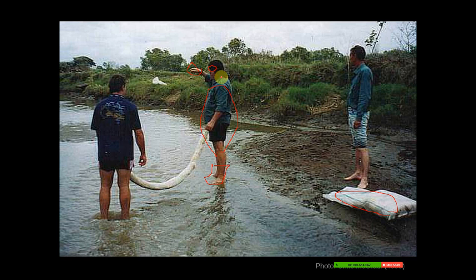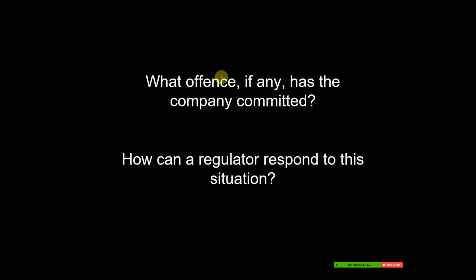It also reflected the level of the company. When you're a regulator you deal with big companies like BHP or ExxonMobil — they've got thousands of staff, procedures in place, and employees drilled in workplace health and safety. Then you go down to small and medium companies and it's a very different story. The poor protective equipment here reflected their environmental procedures — they pretty well just didn't have them. So what offence, if any, has the company committed? And how can a regulator respond in a situation like this?